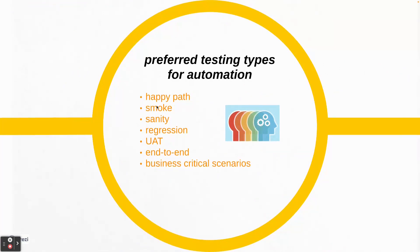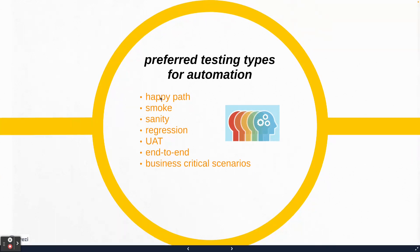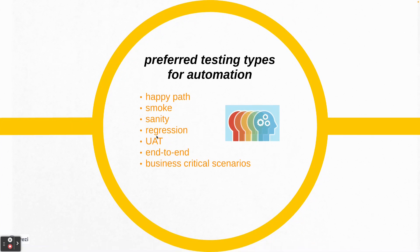The next section talks about preferred testing types for automation. As you may know, there are many testing types. A couple of the commonly automated ones are happy path, smoke, sanity, regression, and numerous others. Not all testing types should be automated — the mentioned list represents the most frequently automated testing types. If you want to know more details about these testing types, please have a look at the videos on our channel where we have explained all of these in detail.